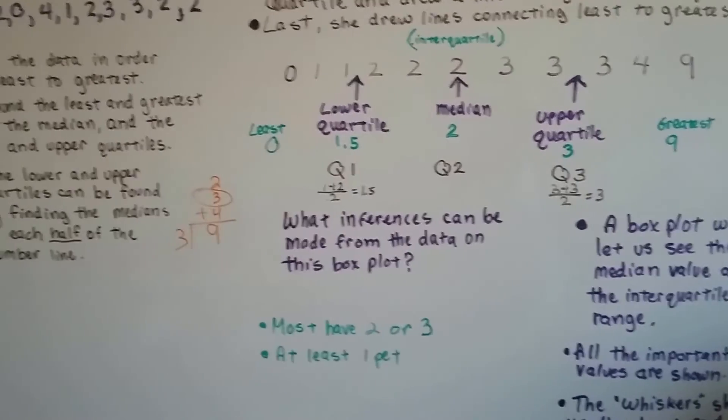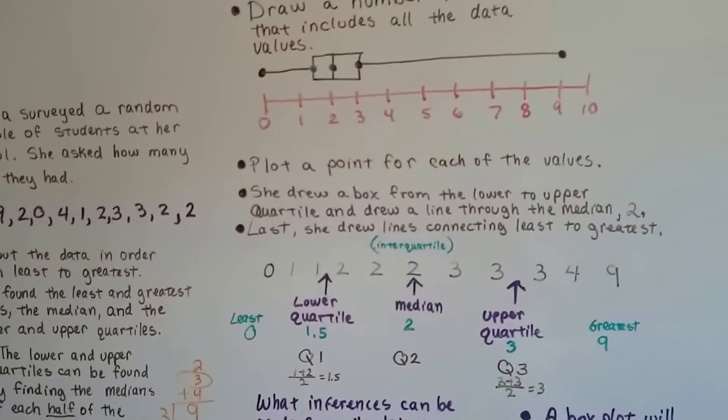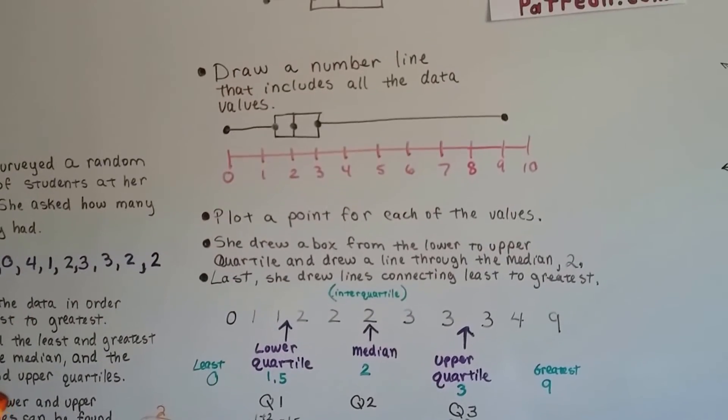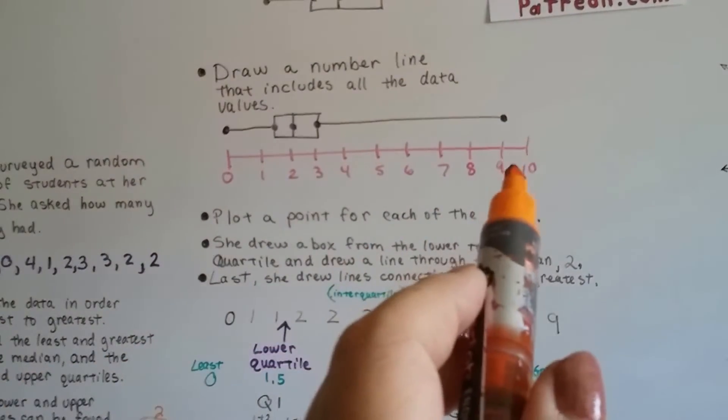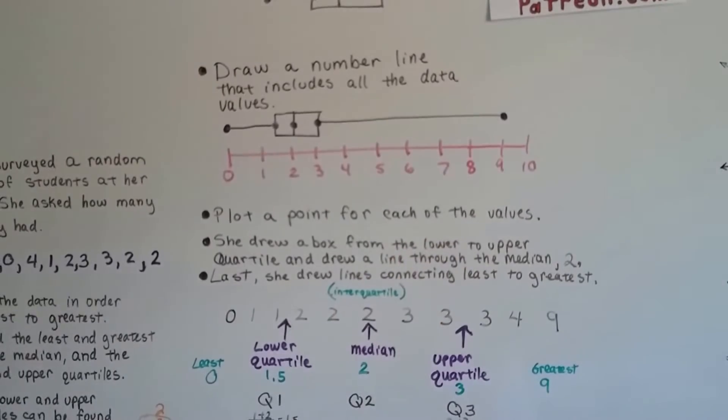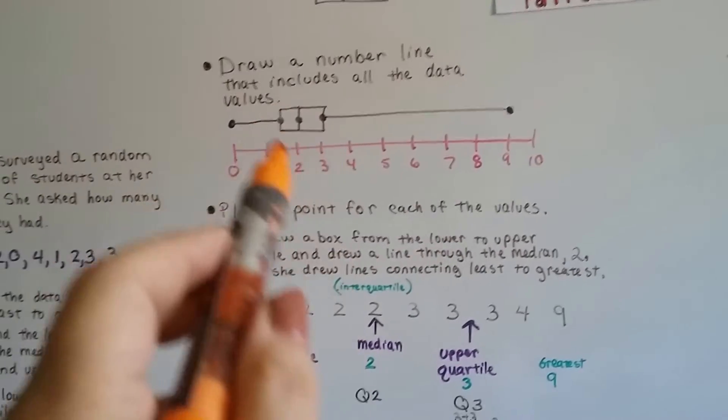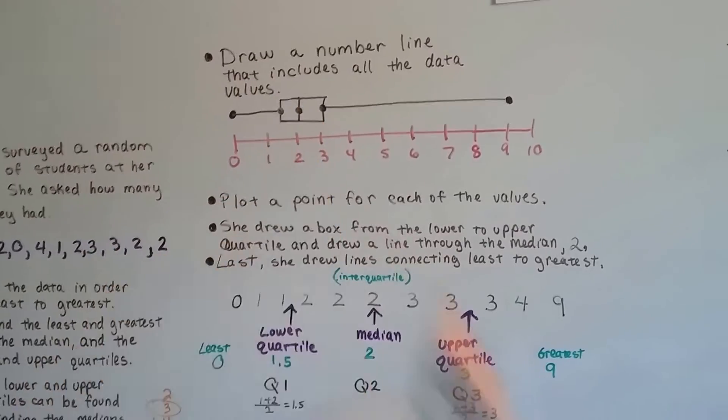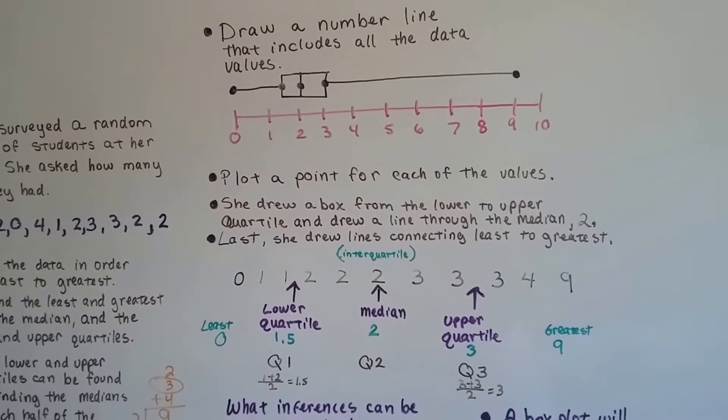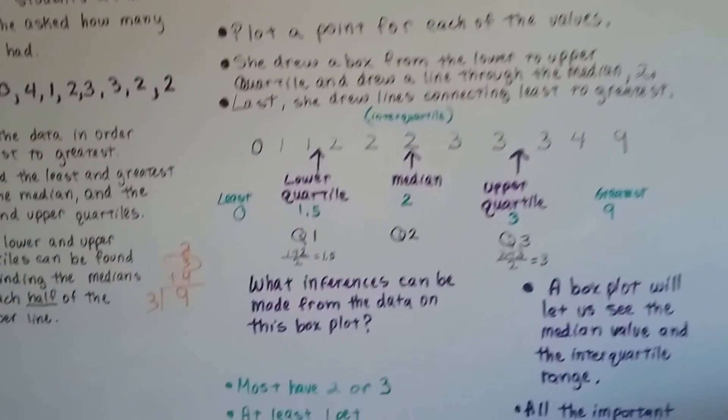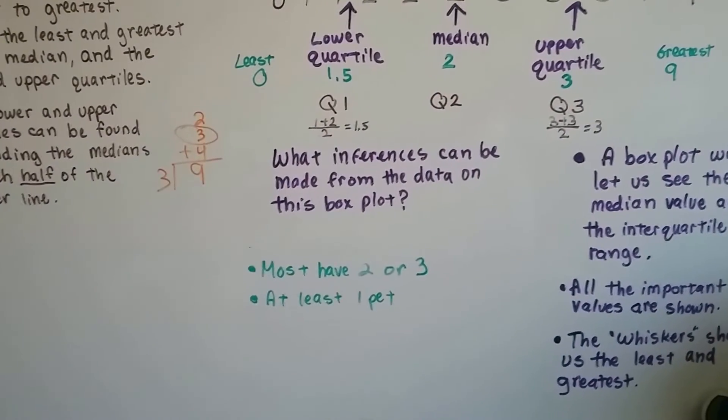So what inferences can be made from the data on this box and whisker plot? That someone has a lot of pets, but that most of the kids have about two or three pets. One and a half to three pets is kind of what's going on.